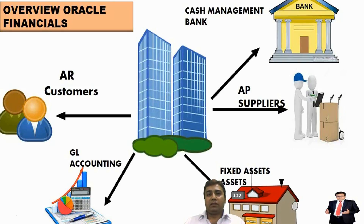Accounts Receivable: When a company receives money from customers on account against goods or services delivered to them on credit, it is recorded as Accounts Receivable, which is a current asset and working capital of a company. Accounts Payable: When a company is liable to pay a due amount to suppliers or vendors on account against goods or services received on credit, it is a current liability of the company.